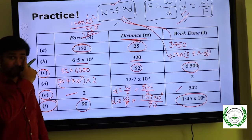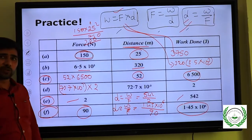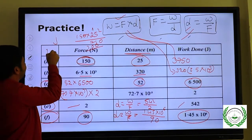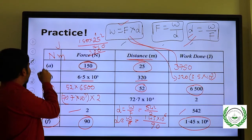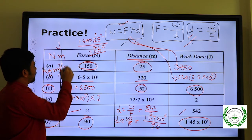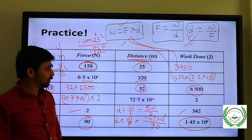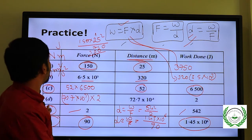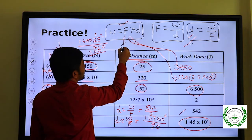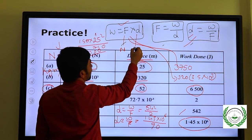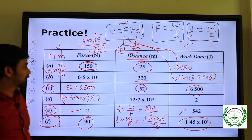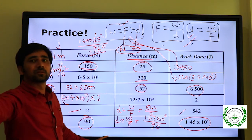Summary: The work formula is W = Force × displacement. The unit for work is Joules, or Newton-meters, or kg·m²/s². The unit for force is Newtons and for distance is meters. So Newton-meters gives us the unit for work. Thank you.